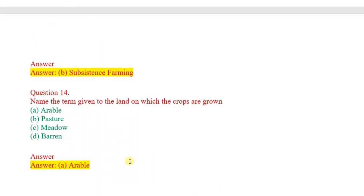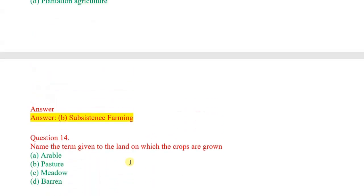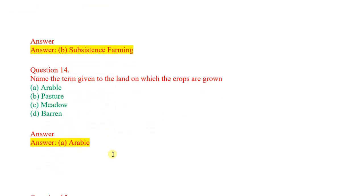Next question number 14: Name the term given to the land on which the crops are grown. Options: arable, pasture, meadow, barren. Correct answer: arable.